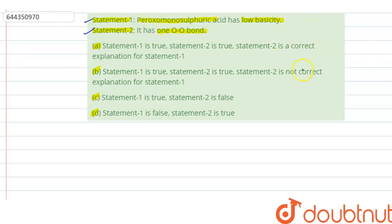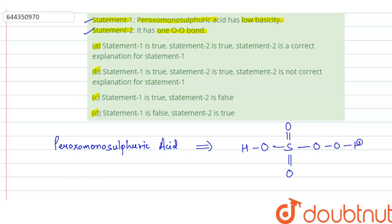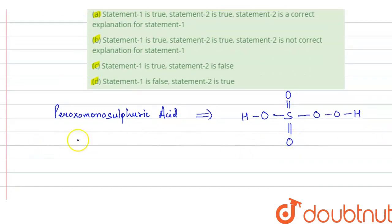The first statement given is that per oxo monosulfuric acid has low basicity. The structure of per oxo monosulfuric acid is: S double bond O, double bond O, O-H, O-O-H. This acid is also known as Caro's acid.